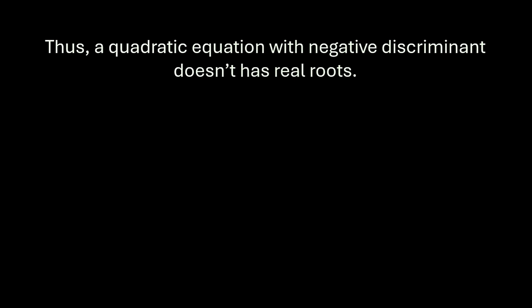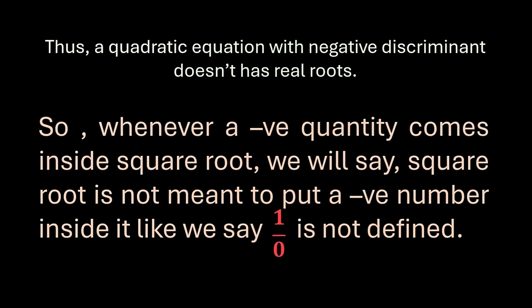So a quadratic equation with negative discriminant has no real roots. Whenever a negative quantity appears inside a square root we say the square root is not defined for negative numbers — just as 1/0 is not defined. So we can say you cannot put a negative quantity inside a square root, and for the quadratic case we can get away with that.